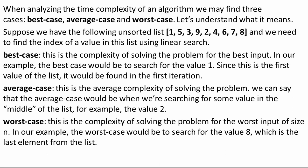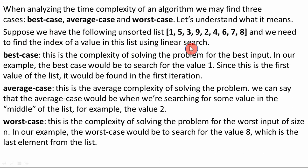We can categorize the time complexity of an algorithm into three categories: best case, average case, and worst case. For example, suppose we have the following unsorted list in Python: [1, 5, 3, 9, 2, 4, 6, 7, 8]. We need to find the index of a value in this list using linear search. There could be three cases — three types of efficiency of an algorithm.